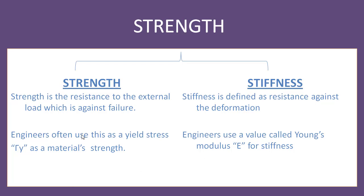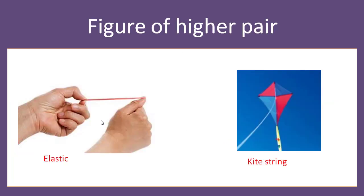In engineering, strength is technically represented by sigma Y, that means yield stress. For example, if we say the yield strength of a material is 200 gigapascals, we are talking about the strength of the material. If we are talking about the Young's modulus of elasticity, then we are talking about the stiffness of the material. So sigma Y shows the strength of the material and Young's modulus shows the stiffness of the material.